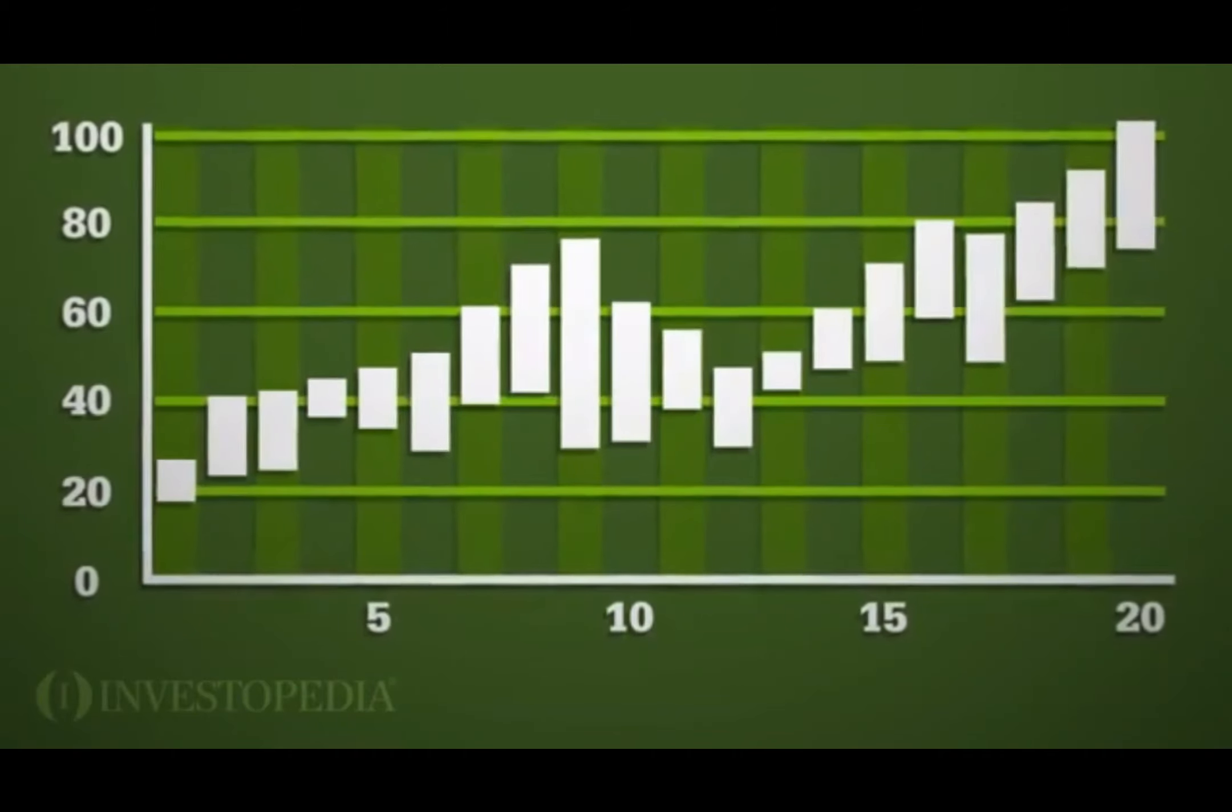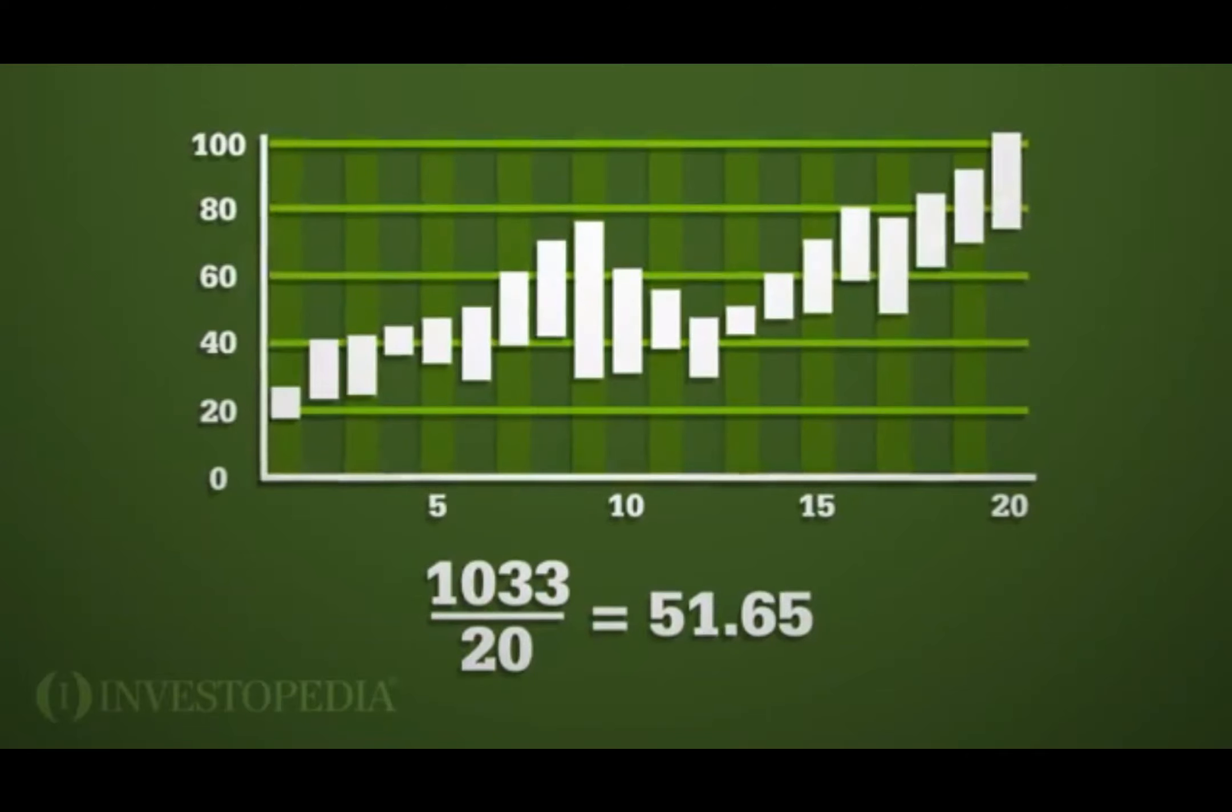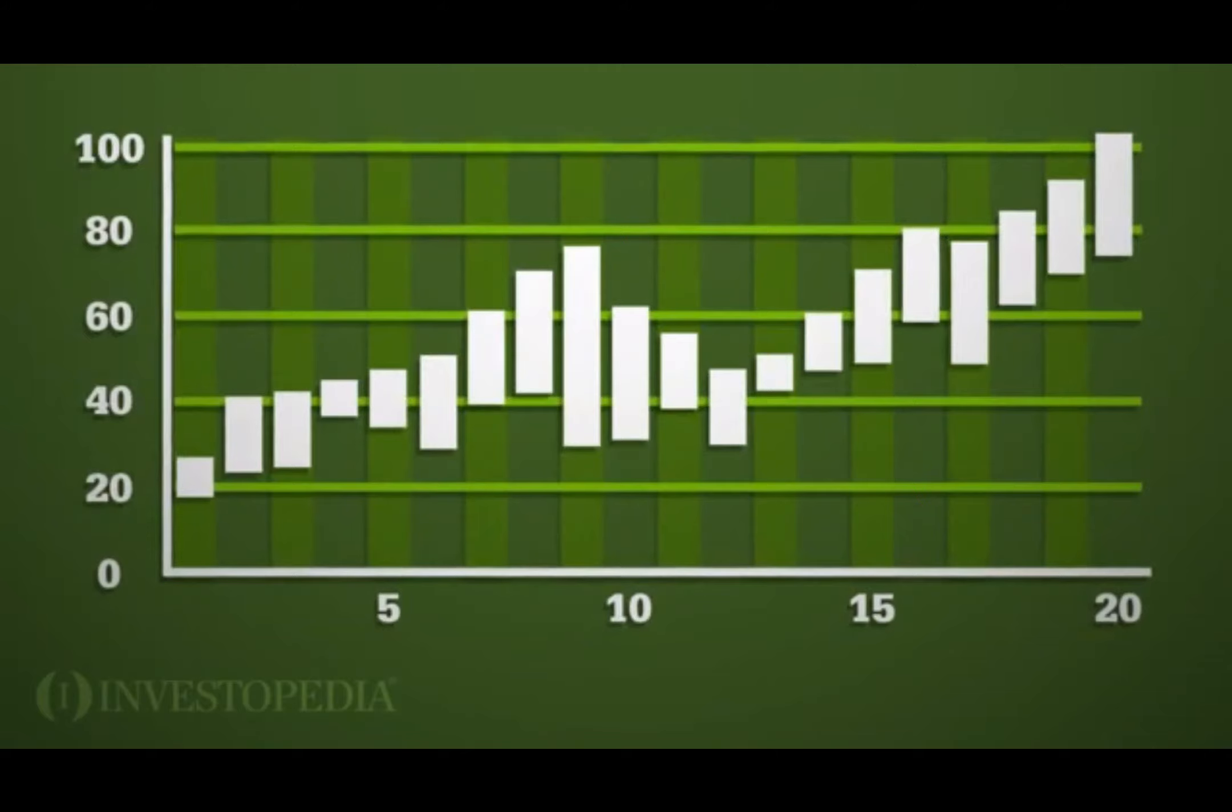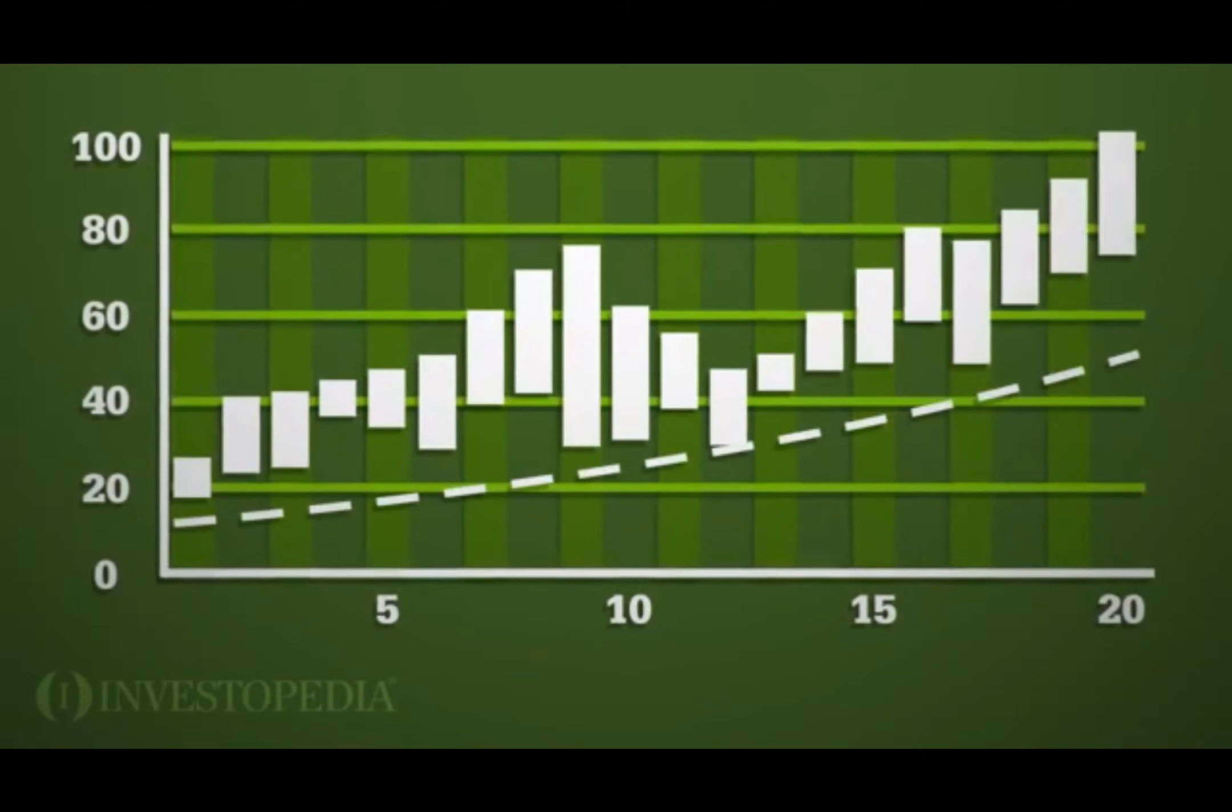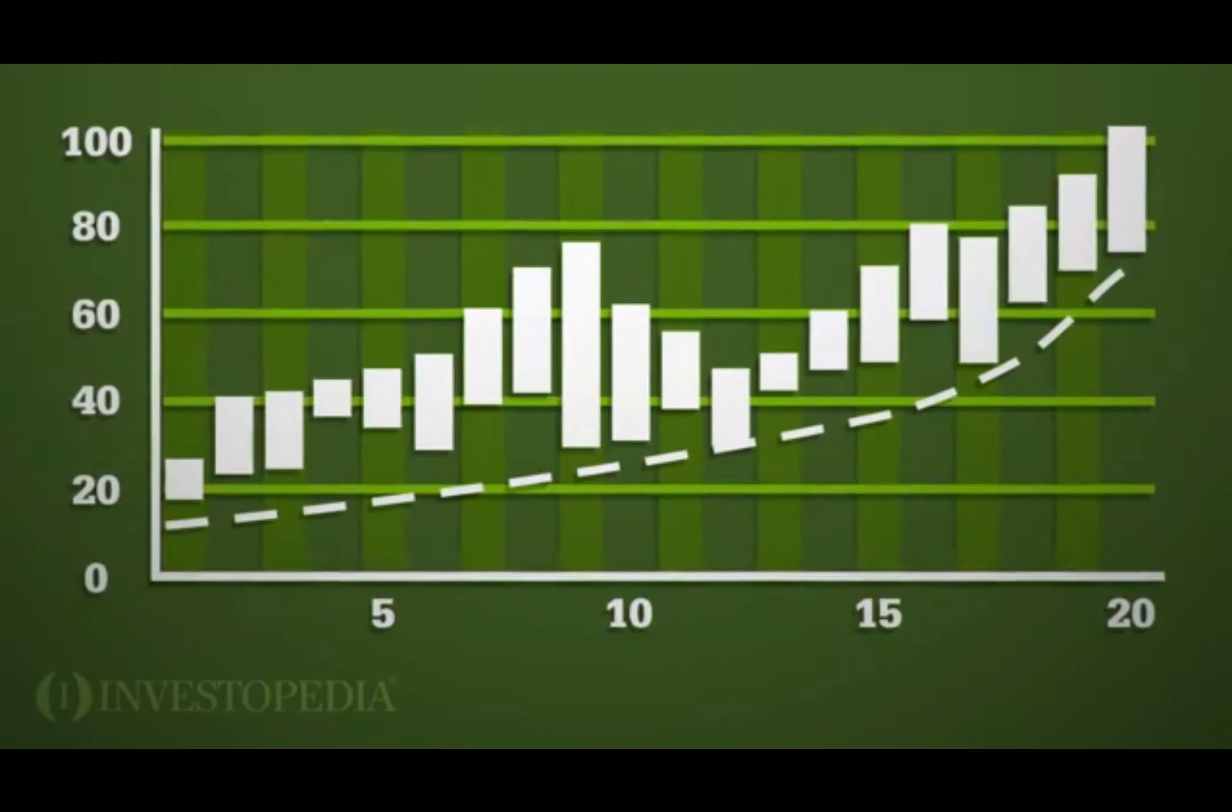Similarly, an exponential moving average will also take an average of the data points over a given period of time, like the simple moving average. However, the weighting of each data point is not equal. More weight is given to the most recent data and the weightings decrease as you go farther back in time.